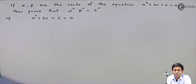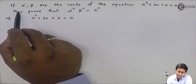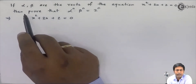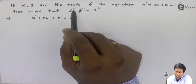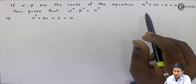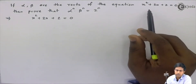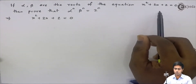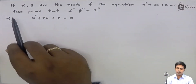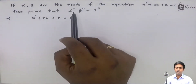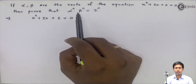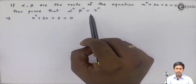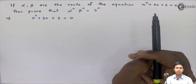Now let's see one more example. If alpha and beta are roots of the equation x² + 2x + 2 = 0, then prove that alpha raised to n multiplied by beta raised to n is equal to 2 raised to n.